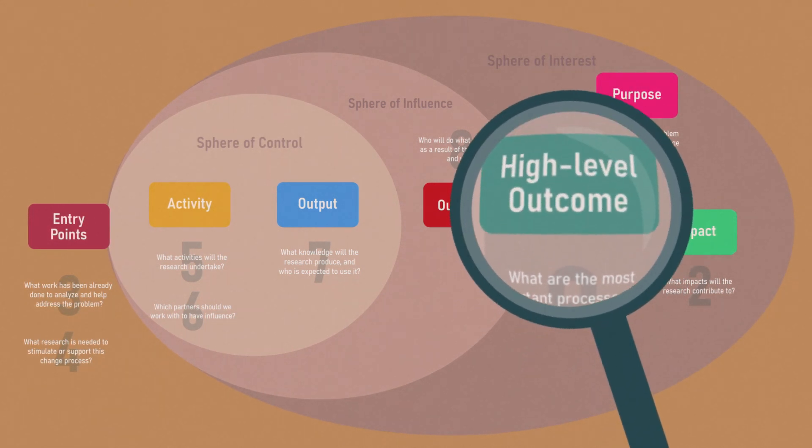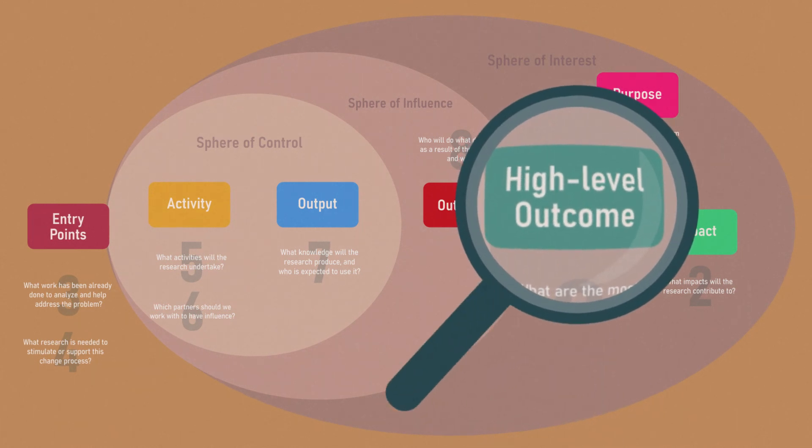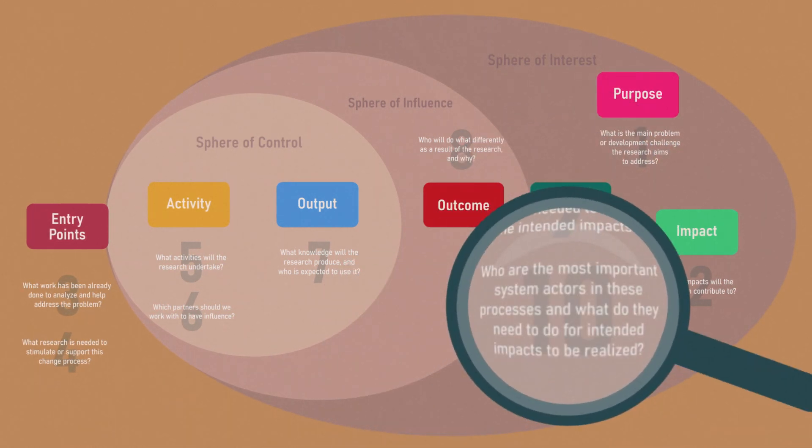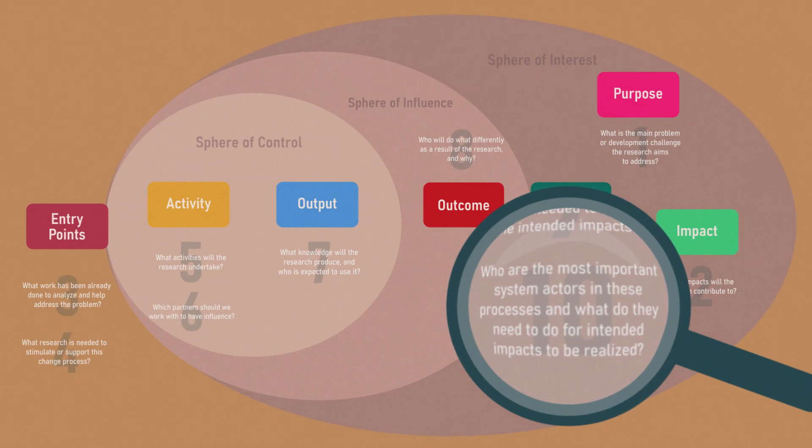These may be ongoing processes led by others that you can support or new ones that you can stimulate. Who are the most important system actors in these processes and what do they need to do for intended impacts to be realized?